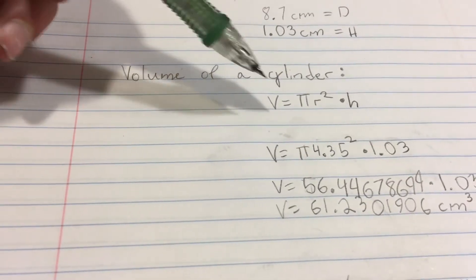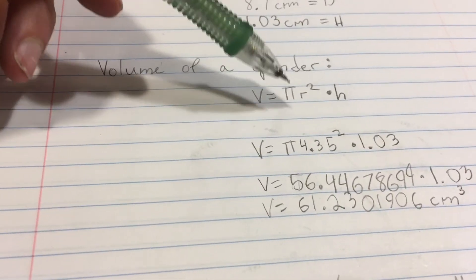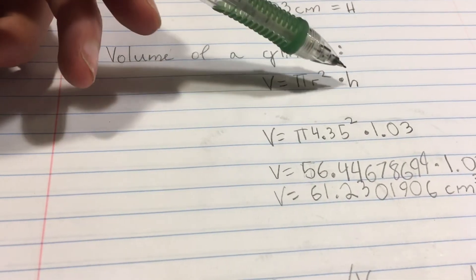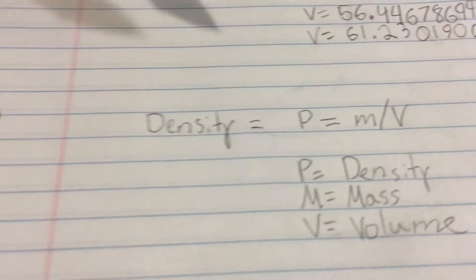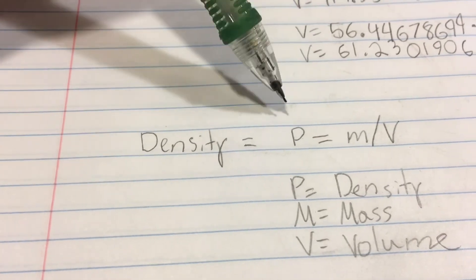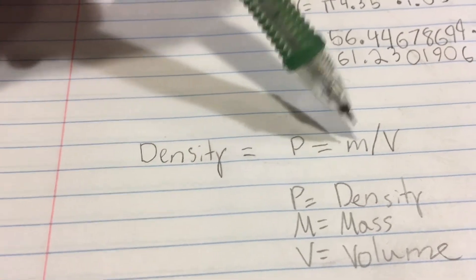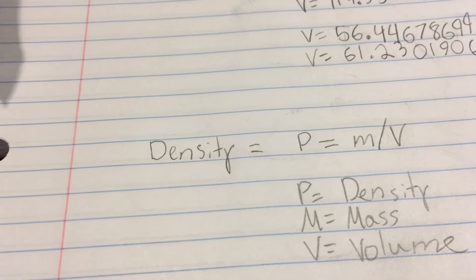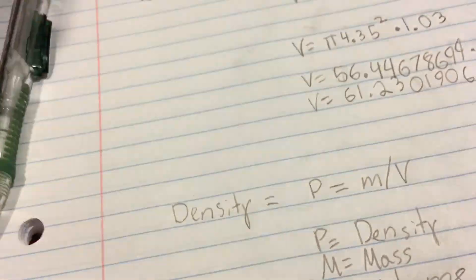So to review, the volume of a cylinder is V equals pi times r squared times h, and density is ρ equals m divided by V. Hope you guys enjoyed, have a nice day.